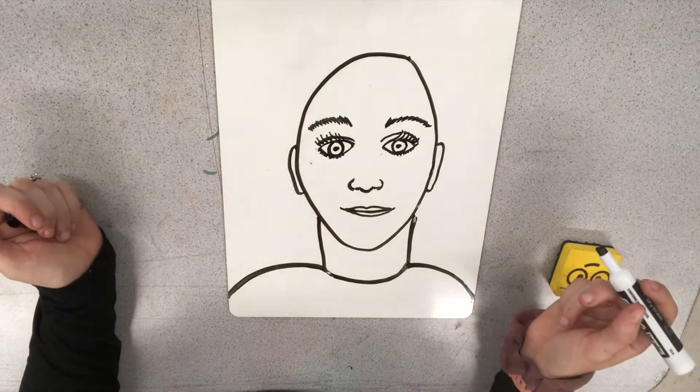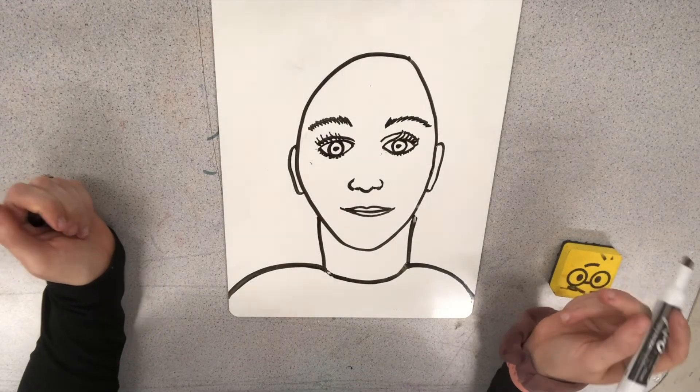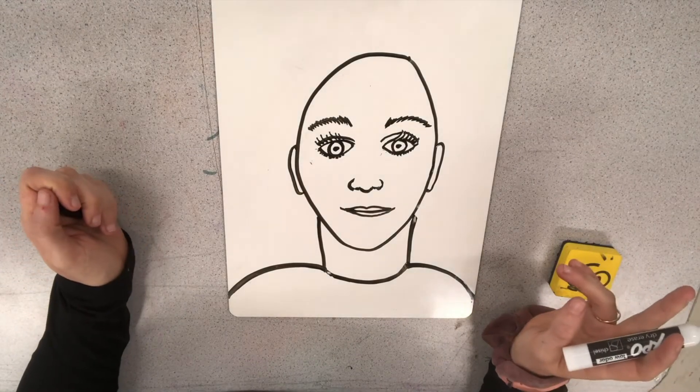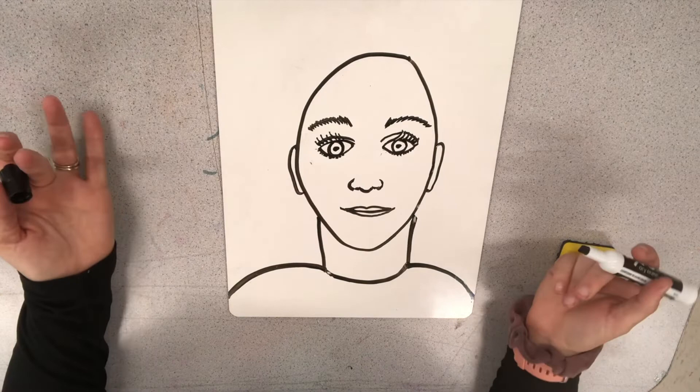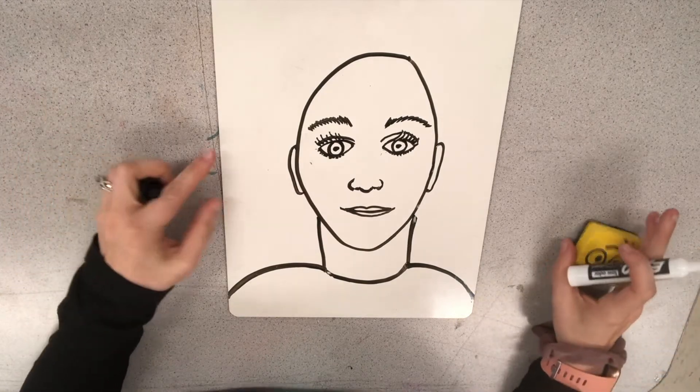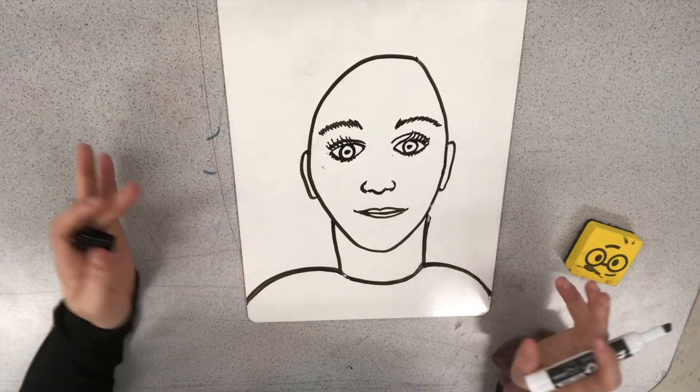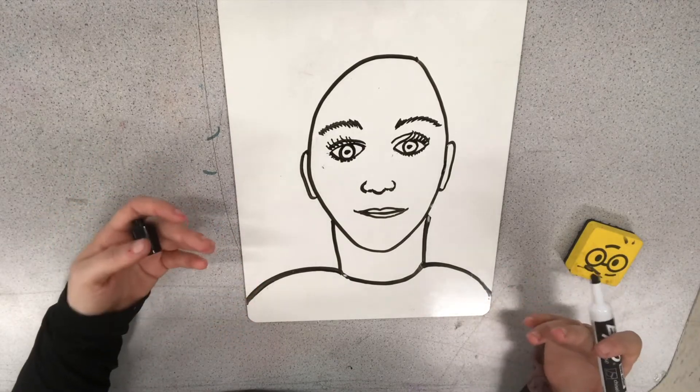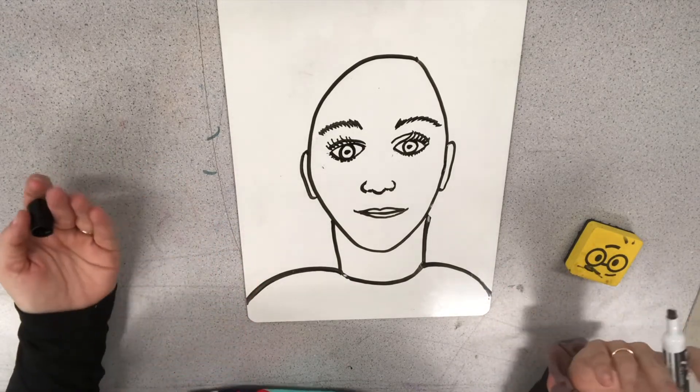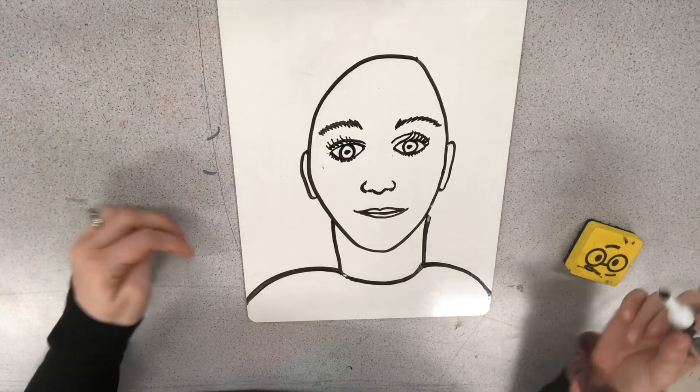And now we're ready to add the hair in. So I'm going to show you a few different hairstyles that you could add. And I'm also going to show you how to add a baseball hat to it. So your person might have straight hair, might have curly hair, might have long hair, might have short hair, or maybe even medium length hair. Let me show you a few different ways.